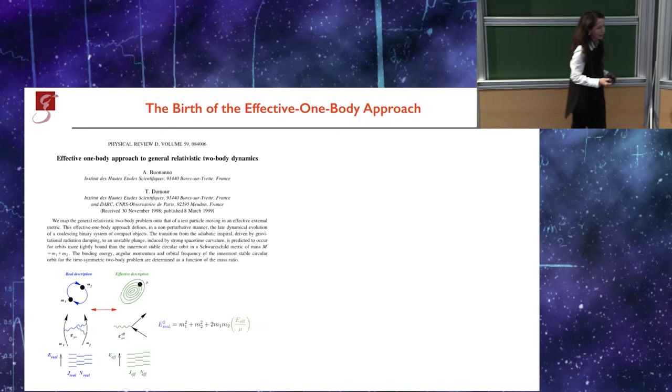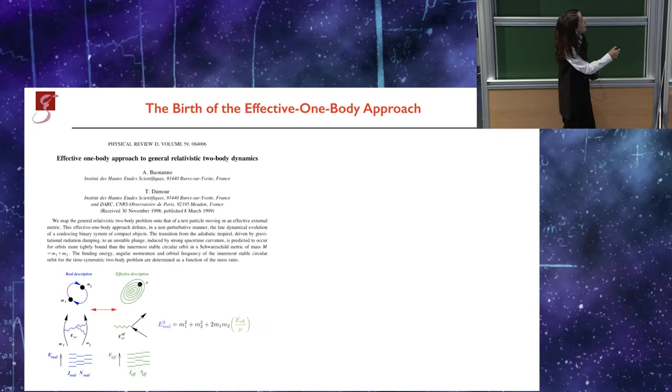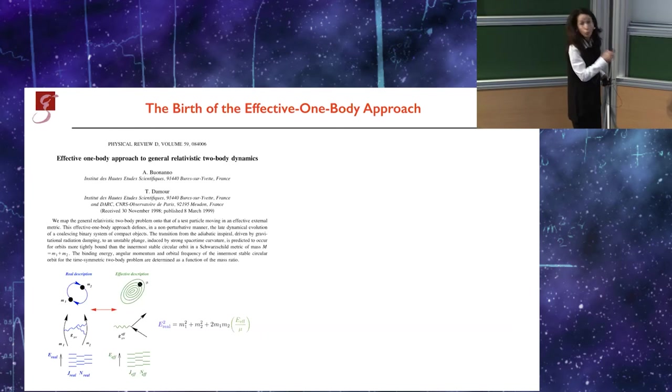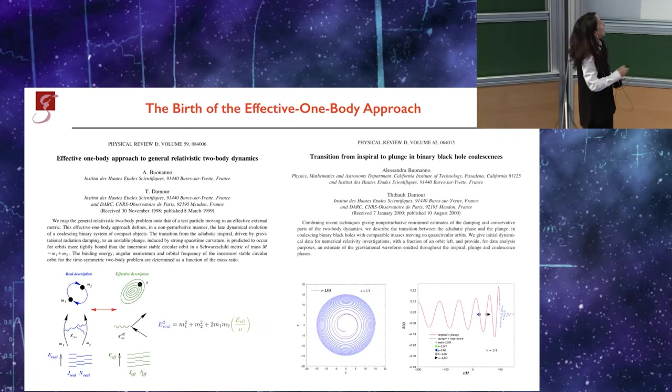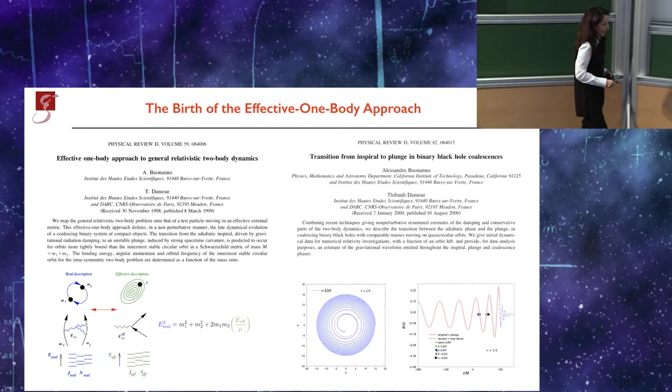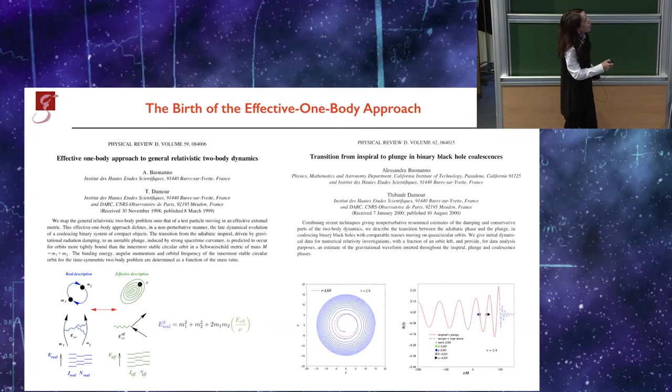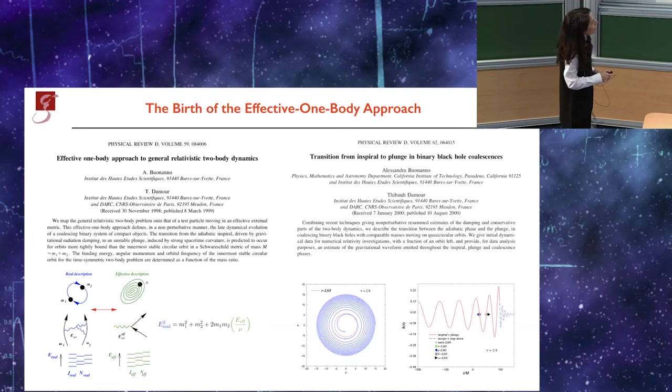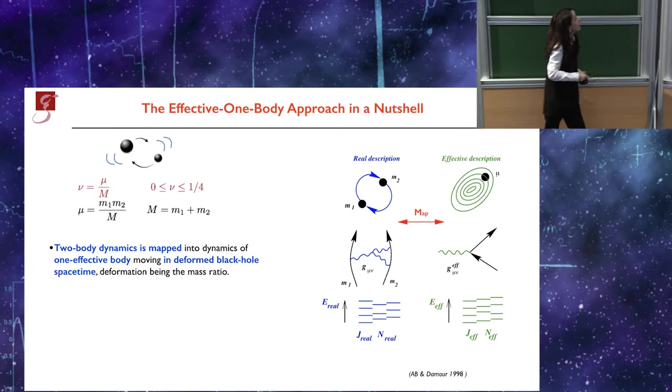So after starting in the summer of 1998, in November 1998 we put out the first paper where we looked at the conservative part of the dynamics and we mapped the two-body description into a one-body one with a particular mapping of the energy. Then we wanted to focus on the waveform. At the same time, in 1999, I actually moved to Caltech with a fellowship in the group of Kip Thorne, so we finished the paper when I was there. This was the paper of the transition from spiral to plunge, with also the waveform, including the merger and the ring down.